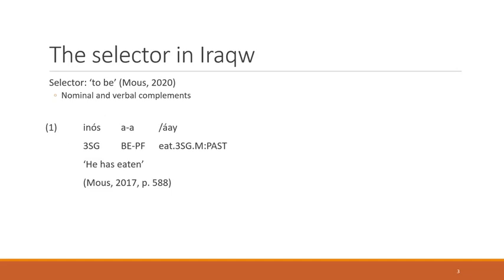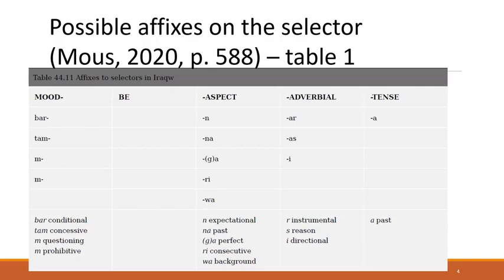According to Maus, Iraqw basically has two verbs: the verb 'to be' and other verbs, and every sentence needs such a verb 'to be,' which is also called the selector. Maus sees it as similar to 'to be' because it can combine with both nominal and verbal complements. We'll focus on the verbal complements here, as that is what the hither combines with. In example one, you can clearly see that 'eat' is a verbal complement because it is inflected for both subject and tense, but it is preceded by the selector. The selector also has a prefix on it, which is one of several affixes it can have, as shown in the table.